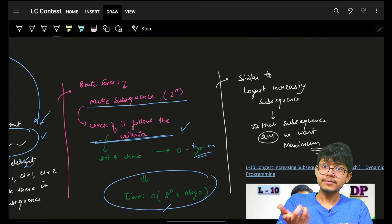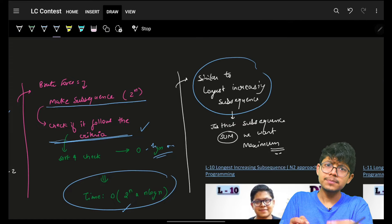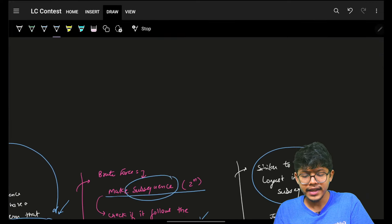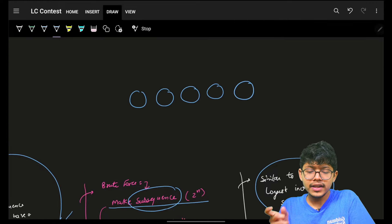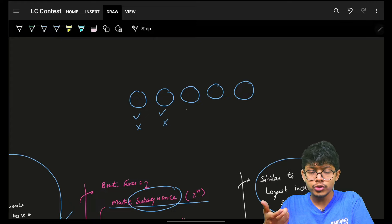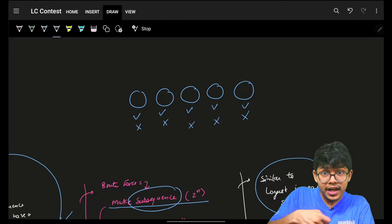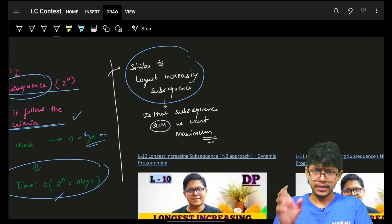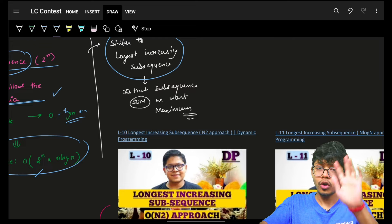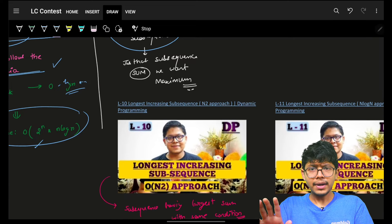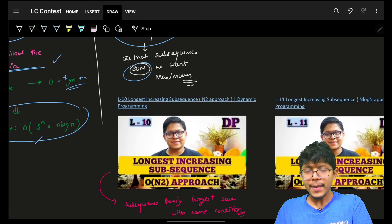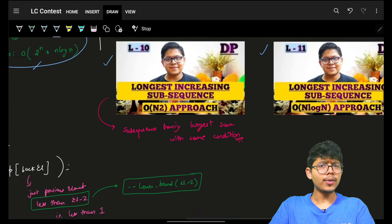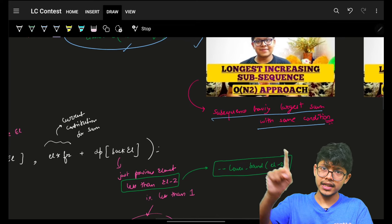This is a simple take-and-not-take DP problem. If we check against our standard DP problems like longest increasing subsequence — it's exactly the same, just a small change: we want a subsequence with the maximum sum rather than the longest length. So the problem boils down to finding the subsequence having the largest sum with some condition, which we will incorporate into the DP transition.